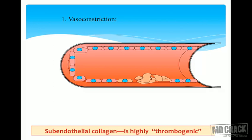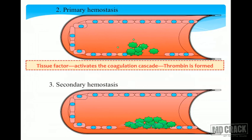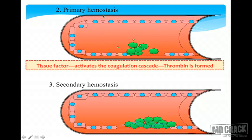At the site of injury, more and more platelets are attracted, leading to the formation of a platelet plug — this is called primary hemostasis. The highly thrombogenic subendothelial collagen causes platelets from the circulating blood to accumulate at the injury site. Tissue factor activates the coagulation cascade and thrombin is formed.